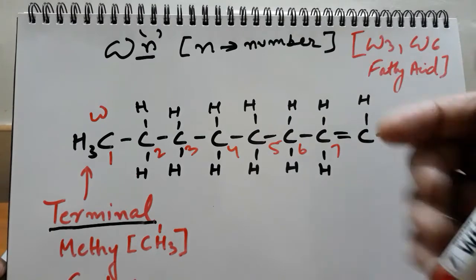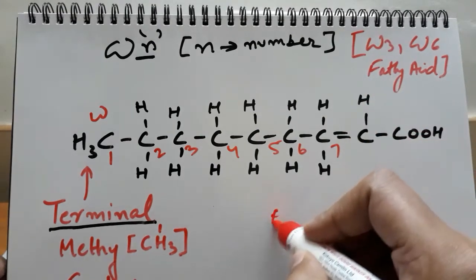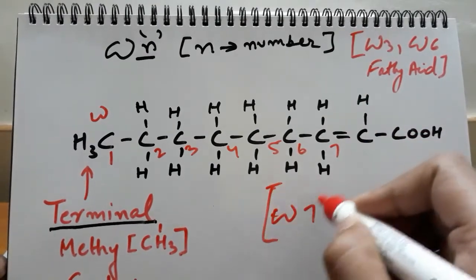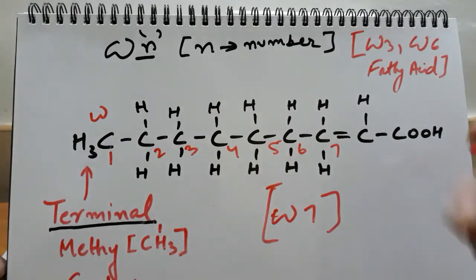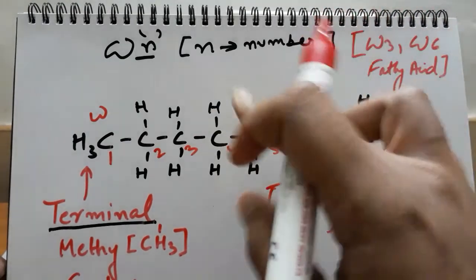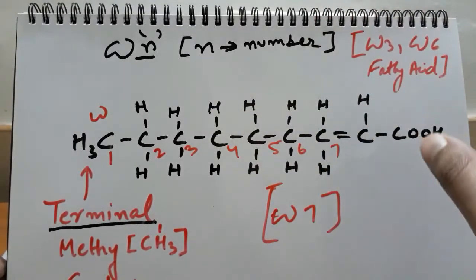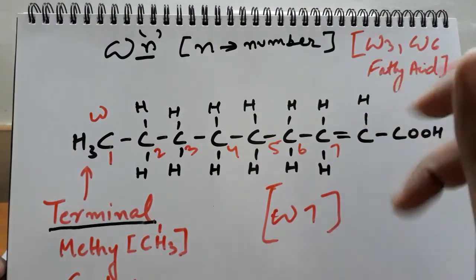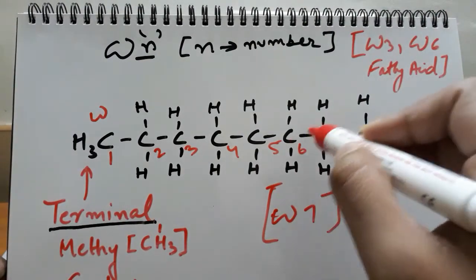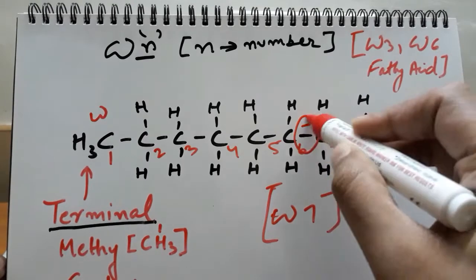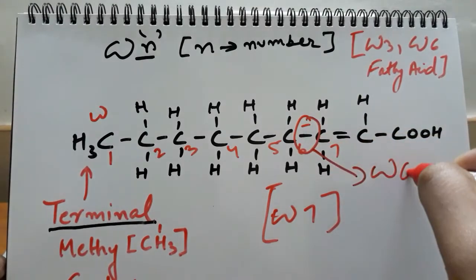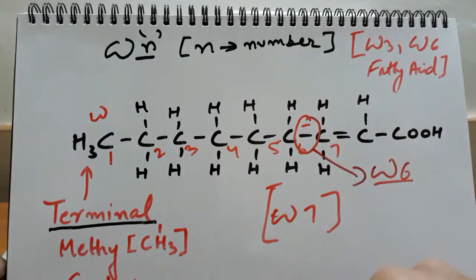this fatty acid. So it becomes an omega-7 fatty acid. This is how we calculate the number in front of omega. Respectively, if the double bond is present here at the sixth carbon, it will be termed omega-6 fatty acid, which you're very familiar with.